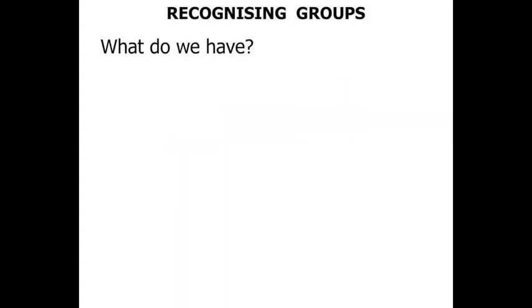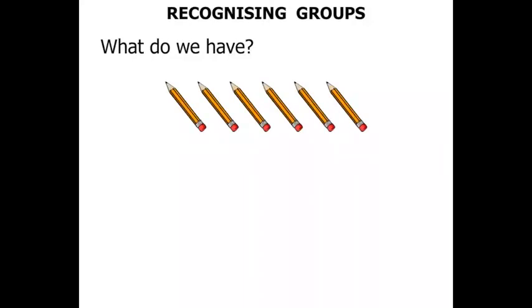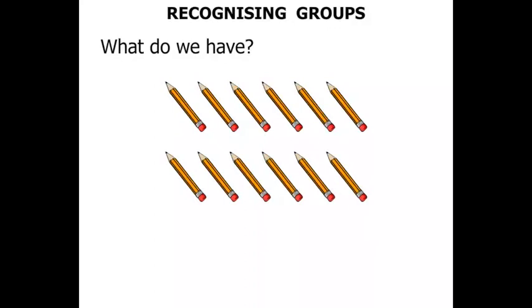What do we have? We've got some pencils there — one row, another row of pencils. So we've got two rows. But how many in each row? Let's count the top row: one, two, three, four, five, six. We've got six pencils in each row. So we've got two rows of six.